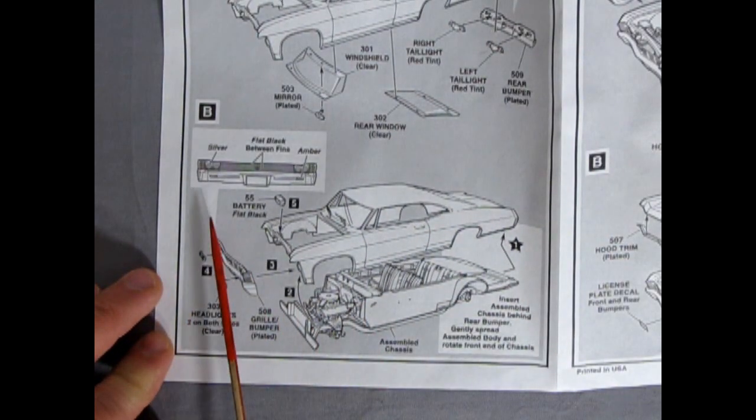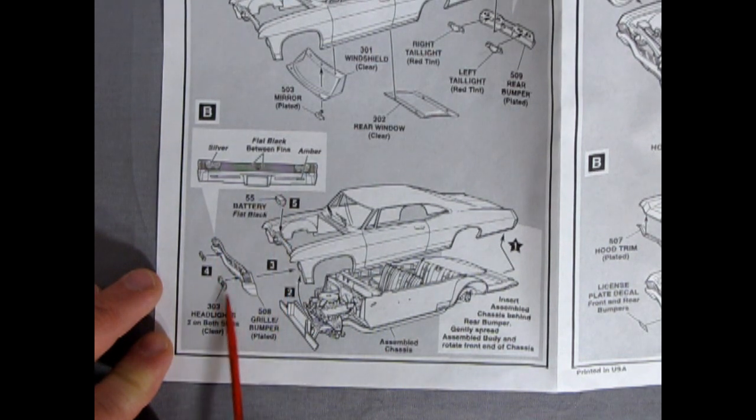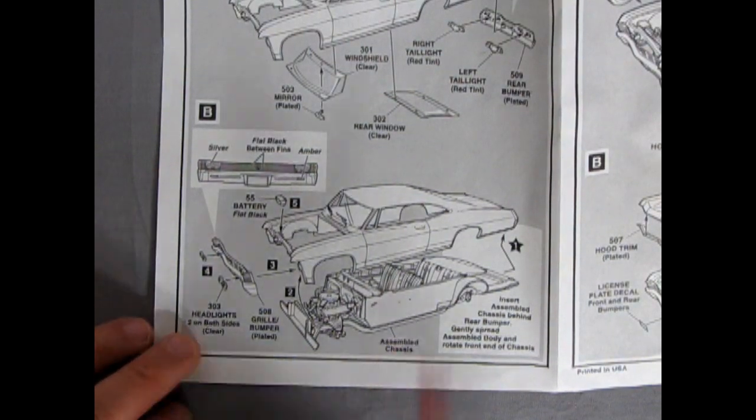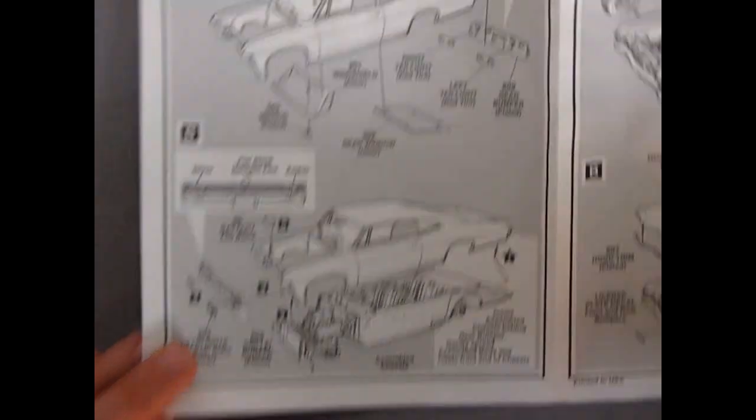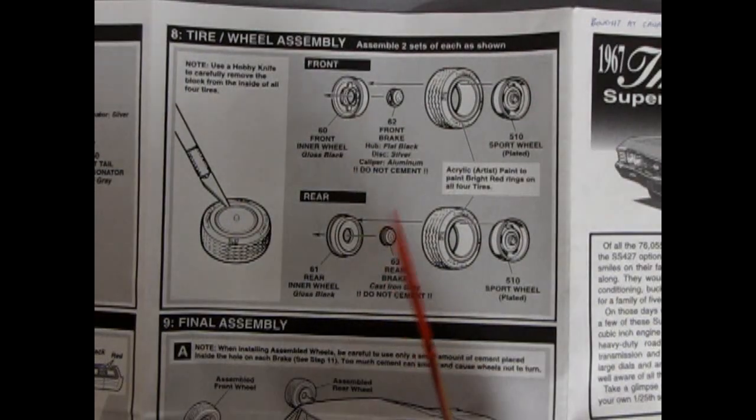This panel here shows, of course, the front going on and the body going into your assembled chassis and everything. Then we get our wheel and tire assembly.